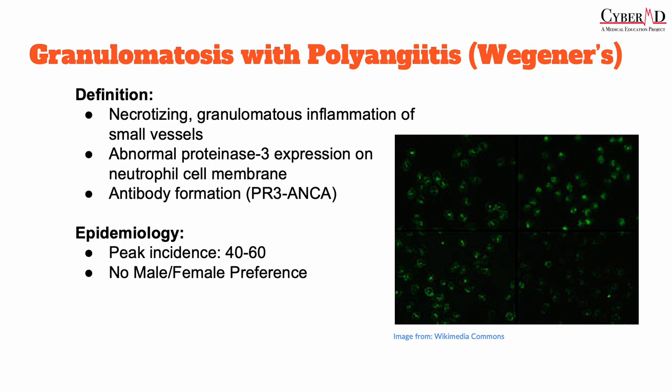The first pathology we will be discussing is granulomatosis with polyangiitis. This vasculitis is a type of ANCA-associated vasculitis characterized by necrotizing granulomatous inflammation of the small vessels. The granulomas are non-caseating, and the disease is caused by the aberrant expression of proteinase 3 on the cell membrane of neutrophils. This abnormal expression subsequently leads to the formation of antibodies against proteinase 3, known as PR3-ANCA, which is confusingly a C-ANCA.